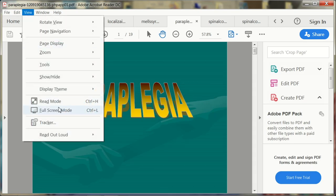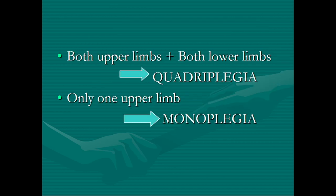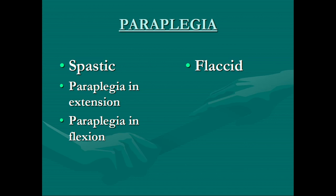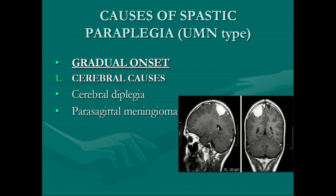Paraplegia is impairment of motor or sensory function of the lower extremities; quadriplegia involves all four extremities. Paraplegia is of two types: spastic and flaccid. Spastic paraplegia has two subtypes: paraplegia in extension — lower limbs take extension attitude — only pyramidal tract is involved, and evaluation is done early; and paraplegia in flexion — lower limbs take flexion attitude — both pyramidal and extrapyramidal tracts are involved, evaluation is done late.